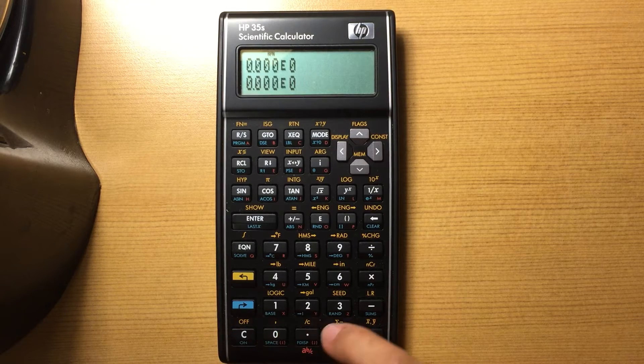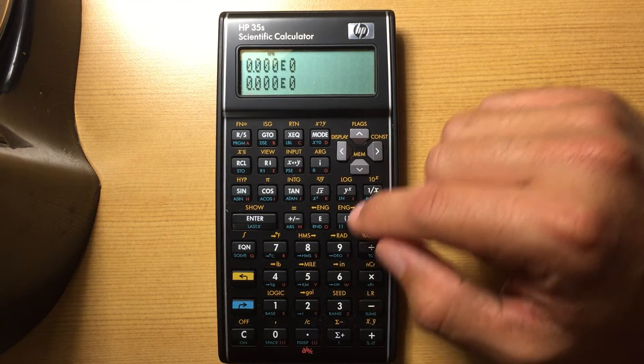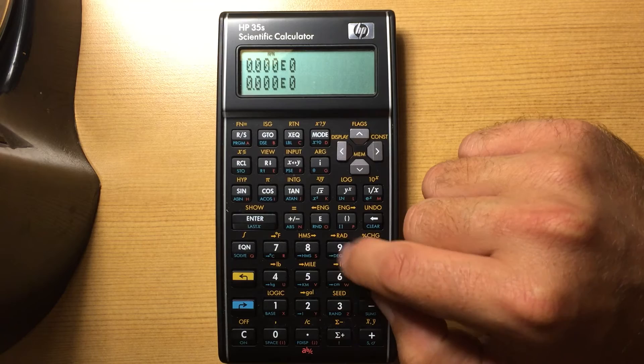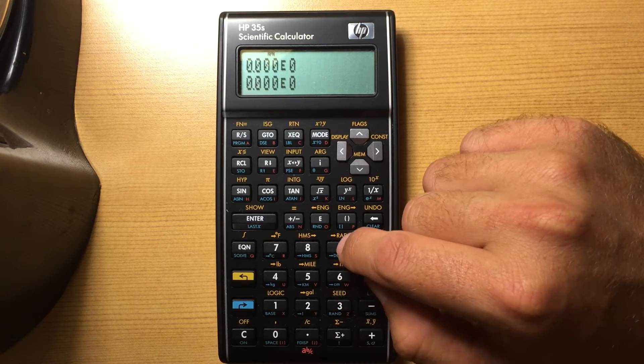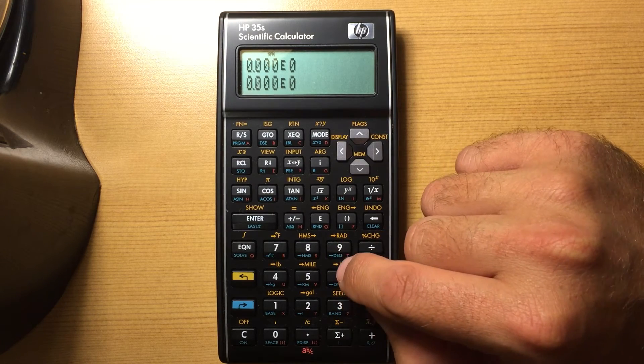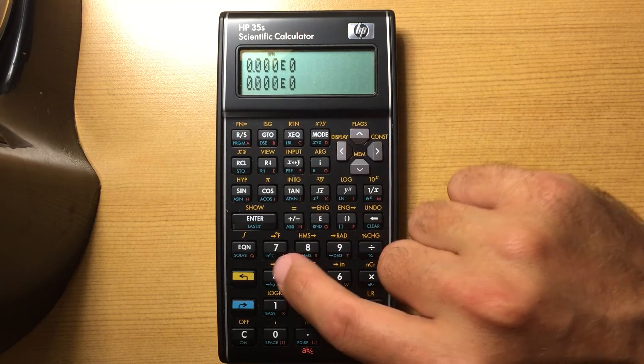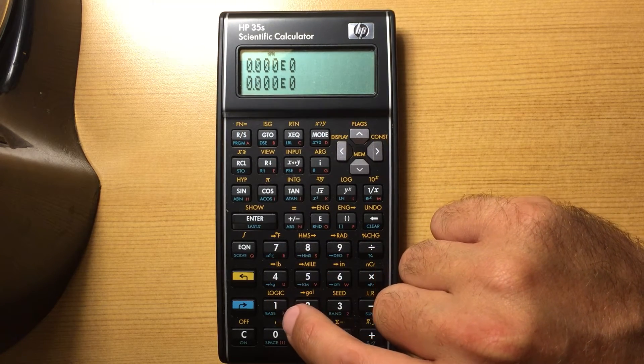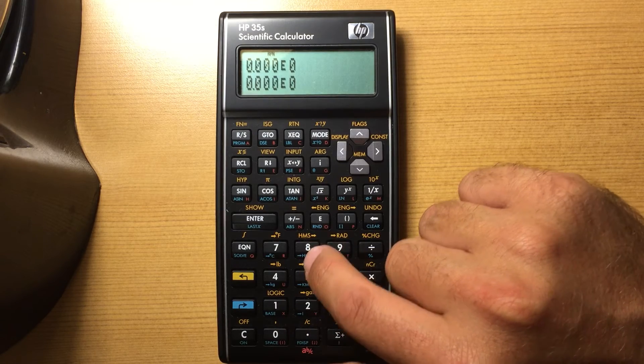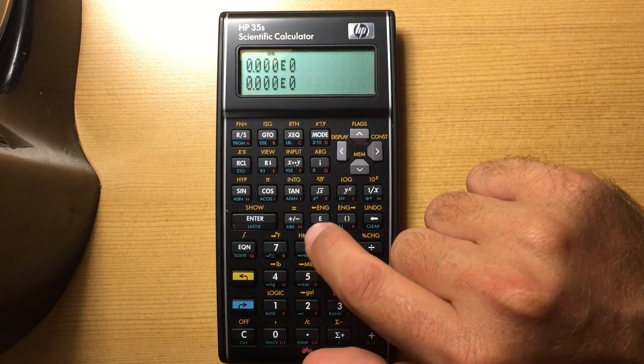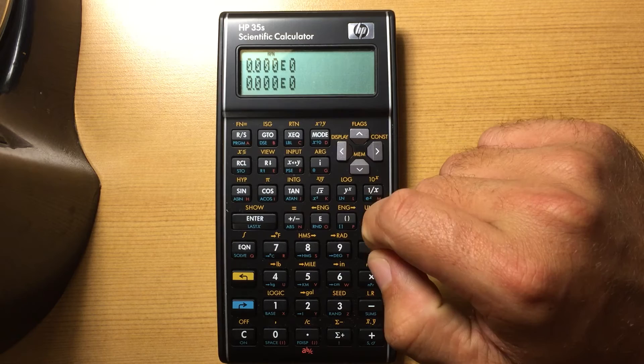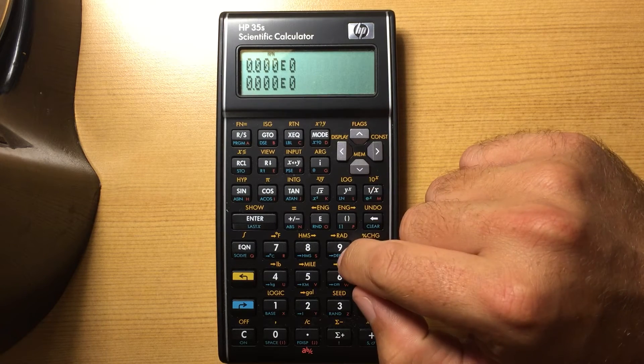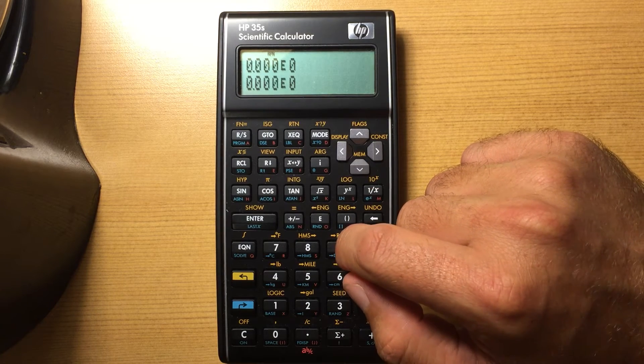I do like having the conversions here, these quick conversions, but I almost feel like those could have been better put into a menu because I mean, I'm converting from Fahrenheit to Celsius not very often. I actually do the hours, minutes, seconds, or degrees, minutes, seconds, more often, but degrees to radians, I hardly ever convert that.